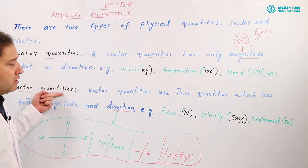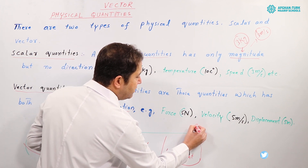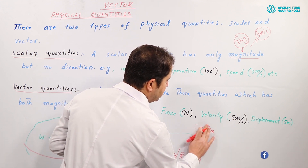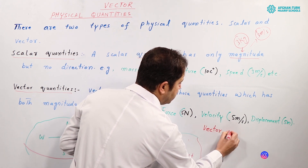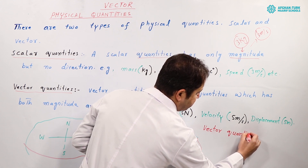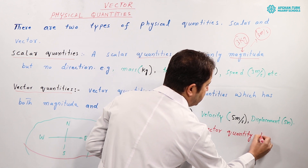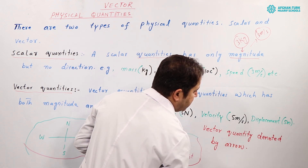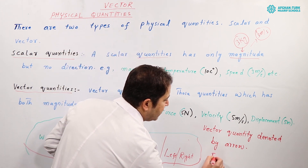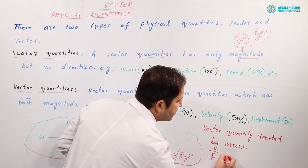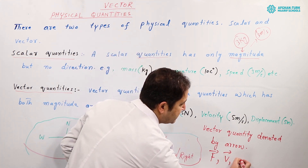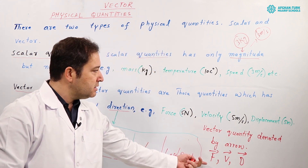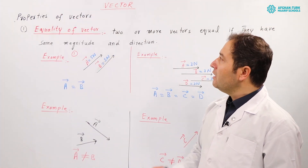Vector quantities are denoted by an arrow on top. For example, if I write force of 5 newton, I must put an arrow on the top. Similarly for velocity and displacement, I must put an arrow on the top. This notation indicates that the quantity is a vector.